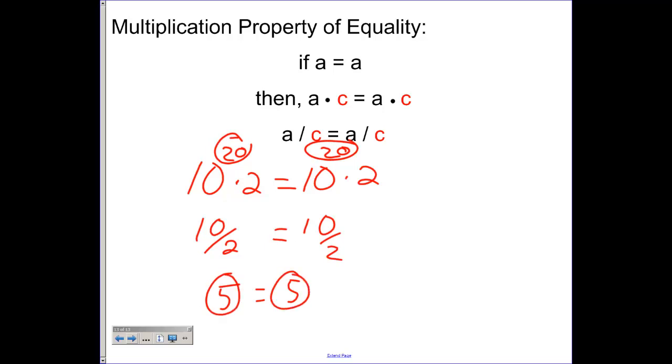Instead of dividing by 2, we could have just taken 10 and multiplying it by a half, which is the same as dividing by 2. And that's why we have it, we call this the multiplication property of equality instead of division.